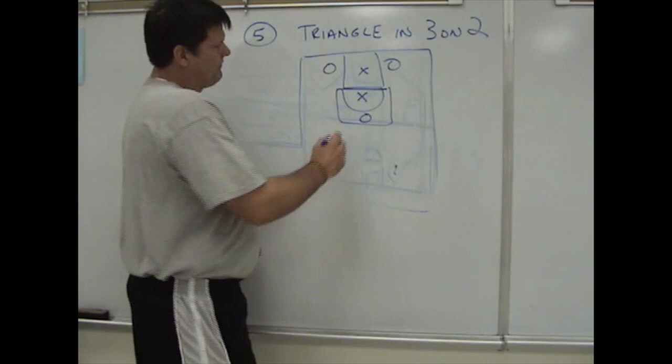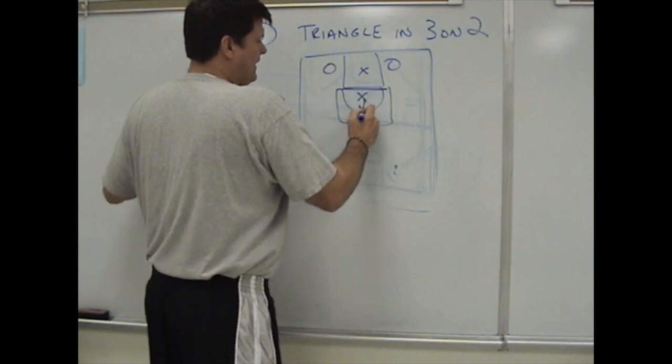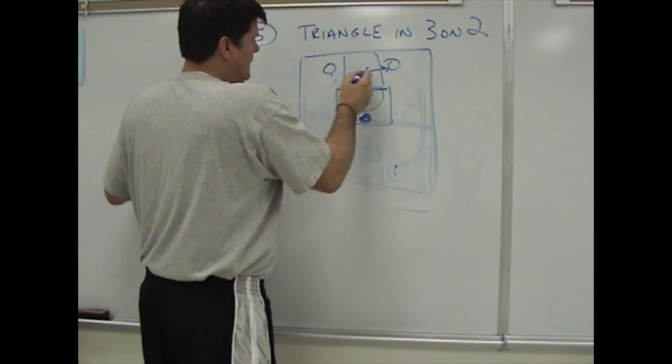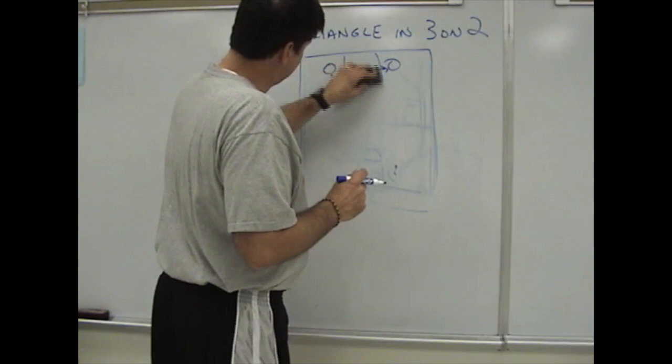What we're doing here is forming a triangle with our offensive guys. Why do we do that? Because two defenders cannot possibly guard three. If this guy has the ball, he defends here — he's got to make a choice of who he's going to defend. If he goes over here, the pass is made there. He recovers back, he slides down, the pass can be made. It's impossible for two guys to guard three in a triangle situation.